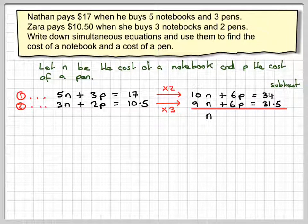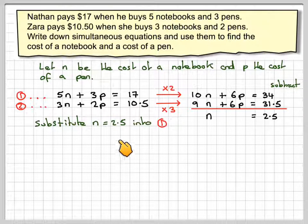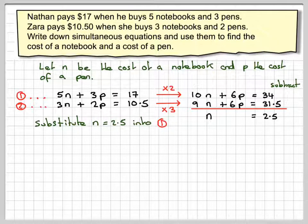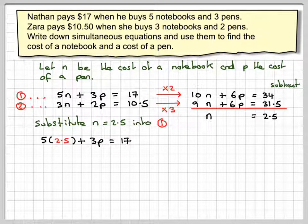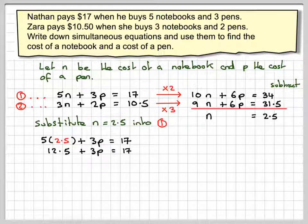And 34 minus 31.5 gives me 2.5. Now in order to find the cost of a pen, we need to substitute N equals 2.5 into either equation 1 or 2. We'll go for equation 1. So we get 5 times 2.5 plus 3P equals 17. So that gives me 12.5 plus 3P equals 17.